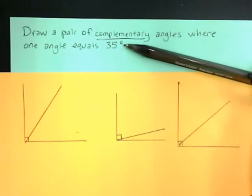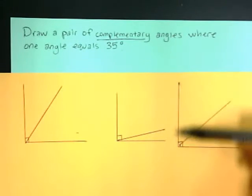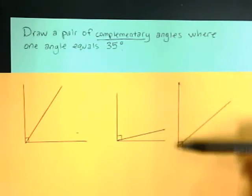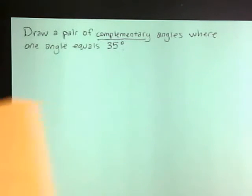We want at least one of those angles to be 35 degrees. But since I know that the total is going to add up to 90 degrees, I'm going to start by drawing a 90 degree angle.